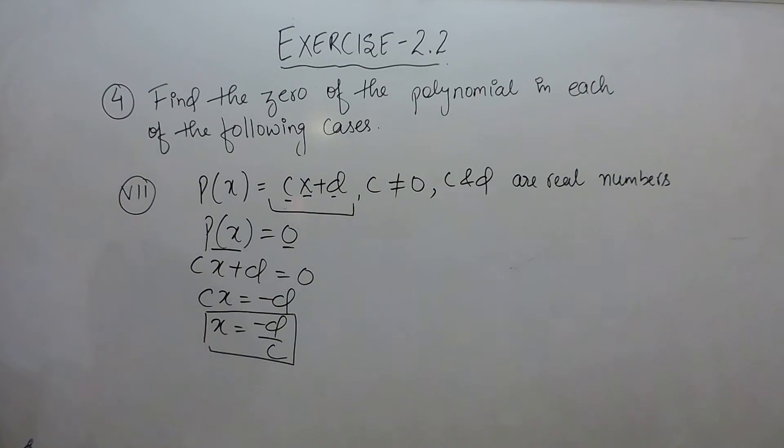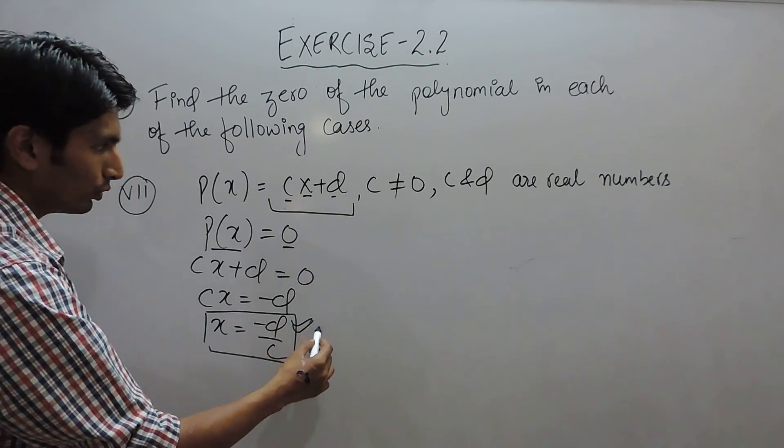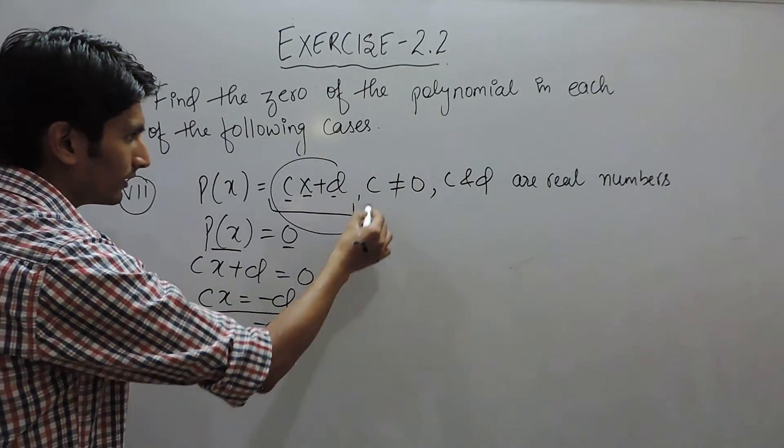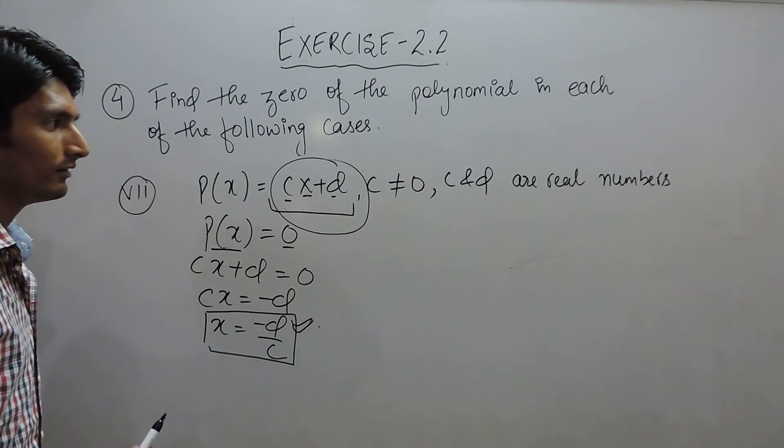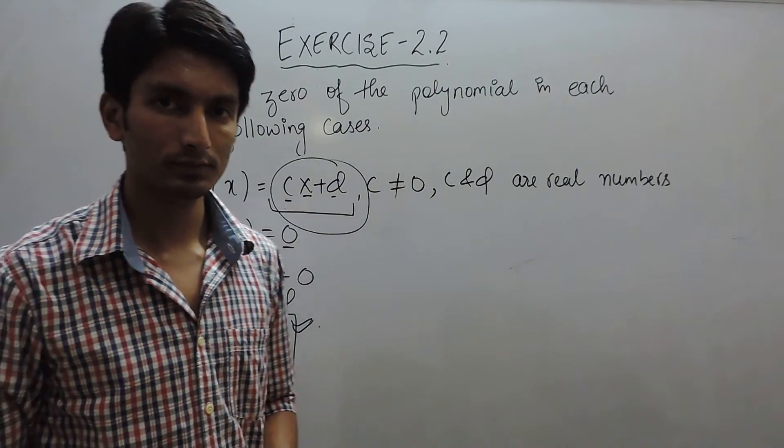So in this case, the value of x becomes minus d upon c, or you can say that for this value, the polynomial will become 0. Thank you.